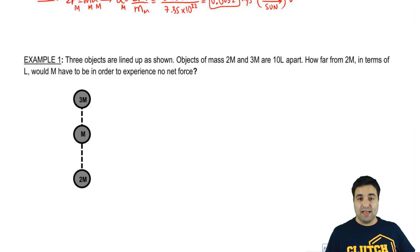Alright, so this question is pretty tricky, but it's a big classic in physics, so I wanted to show you how to work it out. We have three objects lined up as shown. The masses 2m and 3m are 10l apart, so this is some sort of length.